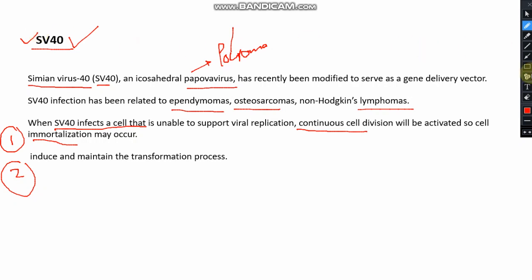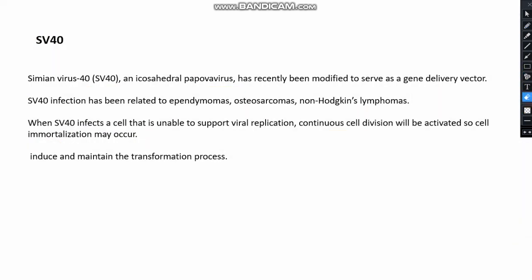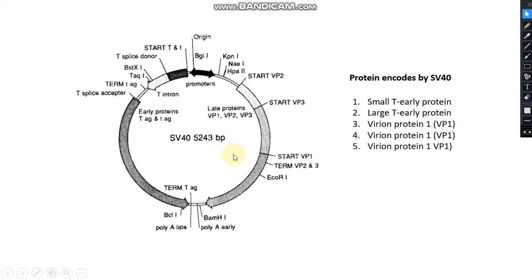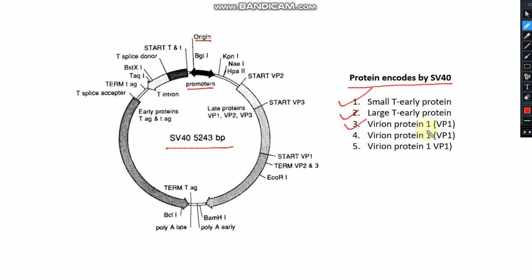Now I'll show you the SV40 genome. The genome contains the origin of replication and promoters, which regulate different genes. SV40 encodes five different proteins: small T early protein, large T early protein, virion protein 1, virion protein 2, and virion protein 3.